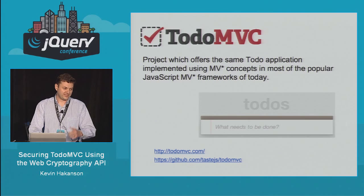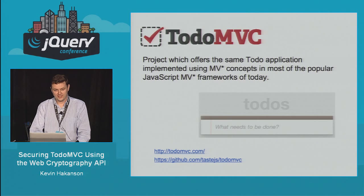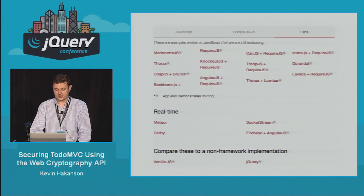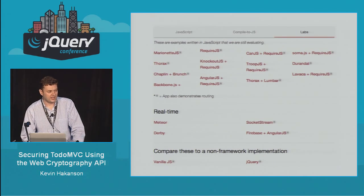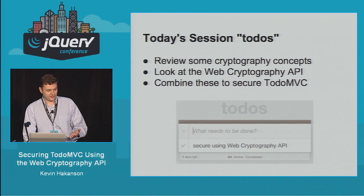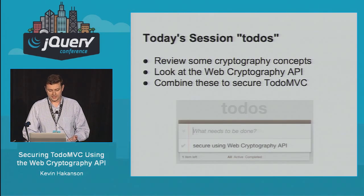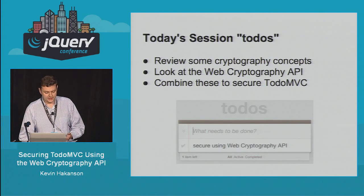Todo MVC — who's heard of it? Who's looked at the code? Who's used it? It's a pretty popular thing for checking out new frameworks. One cool thing is there are options beyond just MV-star frameworks — there are compiled-to-JS libraries, a lab section, and it's constantly extended to add new features. For today's session, we're going to review some cryptography concepts, look at the Web Cryptography API, and then combine these two things to secure the Todo MVC application.